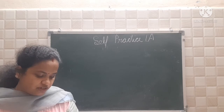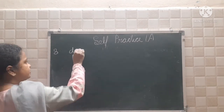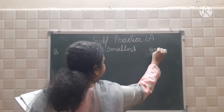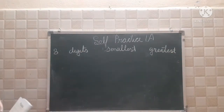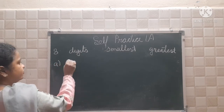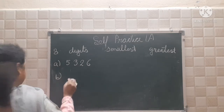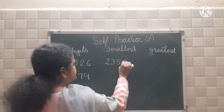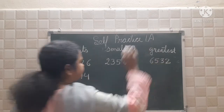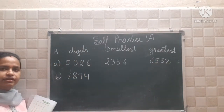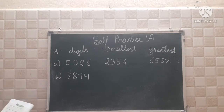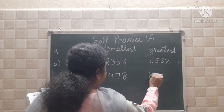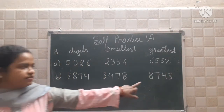In question number 8, digits are given and you have to form the smallest number and the greatest number using each digit only once. Part A: digits 5, 3, 2, 6. The smallest is 2,356 and the greatest is 6,532 — smallest and greatest are in reverse order. Part B: digits 3, 8, 7, 4. The smallest is 3,478 and the greatest is 8,743.